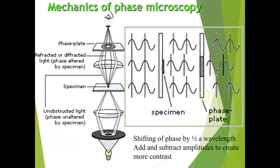In the inverted phase contrast microscope, light passes through the specimen and then the phase plate before entering the eye. The phase plate shifts the wavelengths of light by a half so that the amplitudes — the distance of the displacement in a wave — can be added and subtracted, which creates more contrast. This allows you to see the cells and structures like the nucleus within the cells much better than with a normal brightfield microscope.